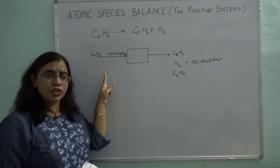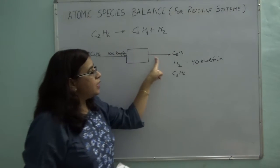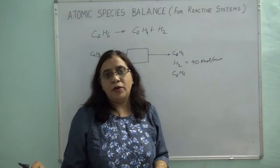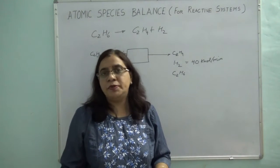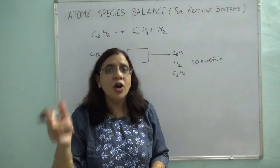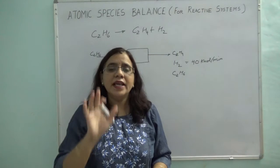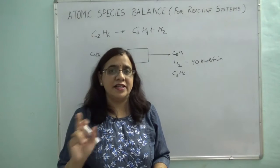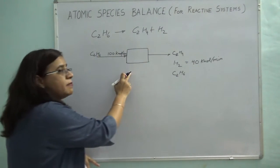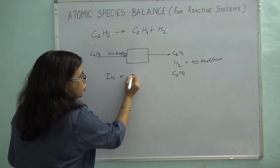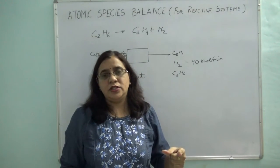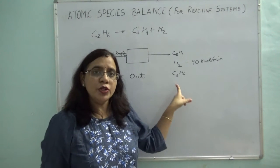Atomic species balance is very simple. What you do is count the number of atoms entering and equate it to the atoms coming out, because atoms are indestructible. In a chemical reaction the number of atoms remains the same — they just break bonds and combine in different ways to produce new species. So if you take a molecular species balance you have to account for generation and consumption terms, but atomic species are not destroyed or created in a chemical reaction. Your material balance takes the simple form: in equals out.